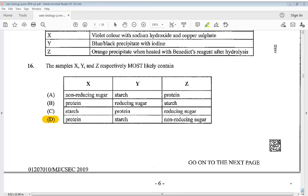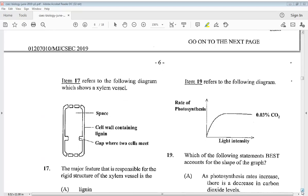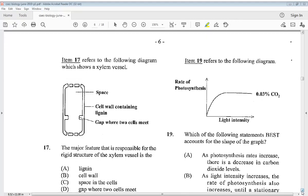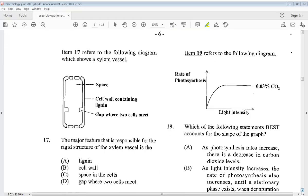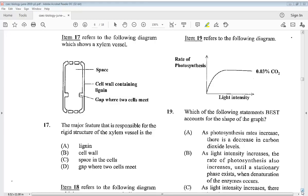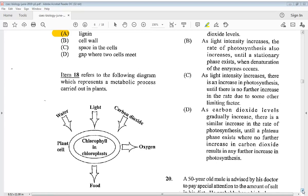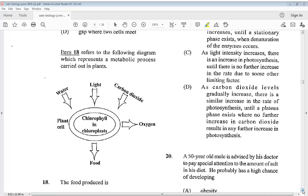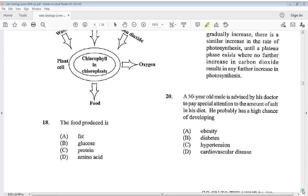Item seventeen refers to the following diagram which shows a xylem vessel. The major feature that is responsible for the rigid structure of the xylem vessel is A, lignin. Item eighteen refers to the following diagram which represents a metabolic process carried out in plants. This is another repeated question. The food produced is B, glucose.